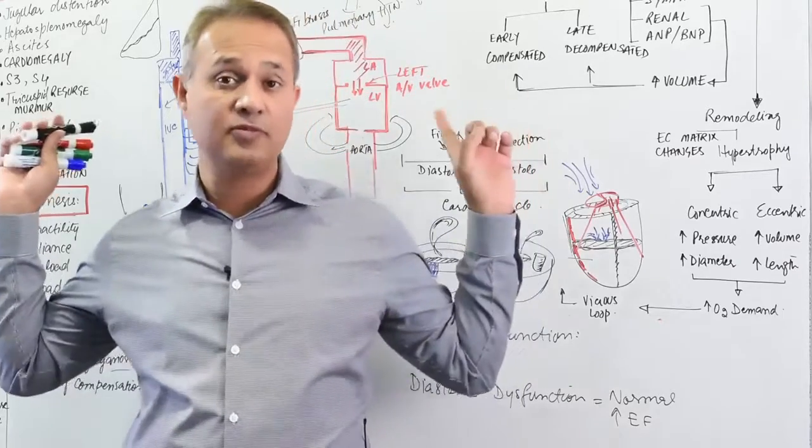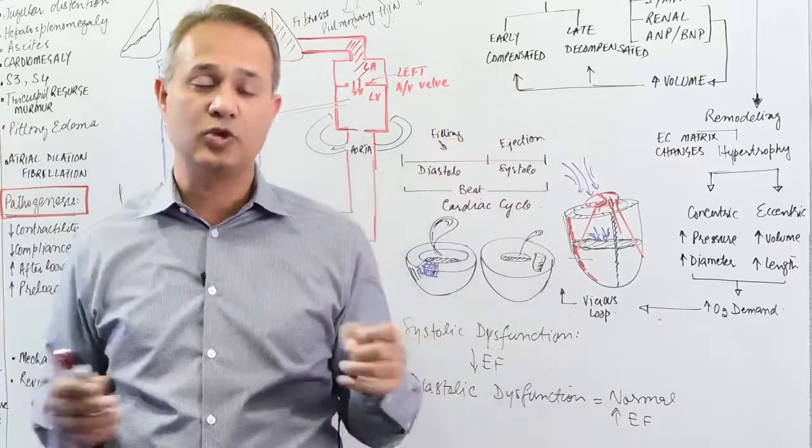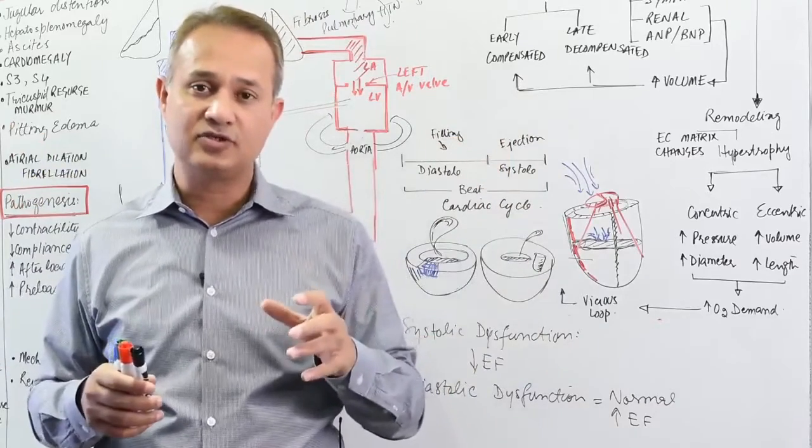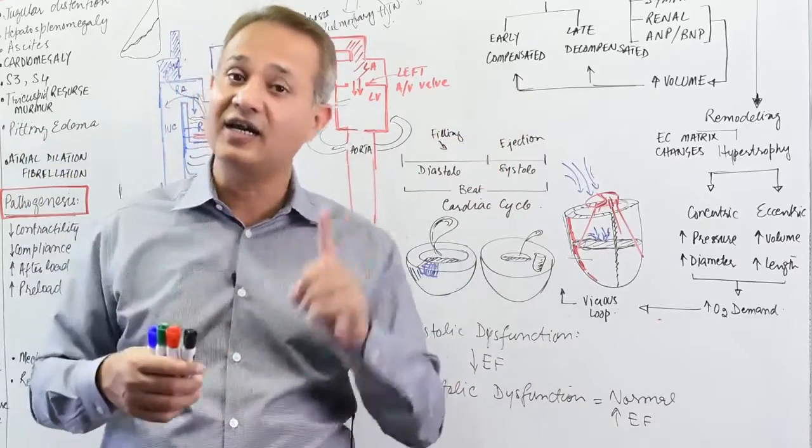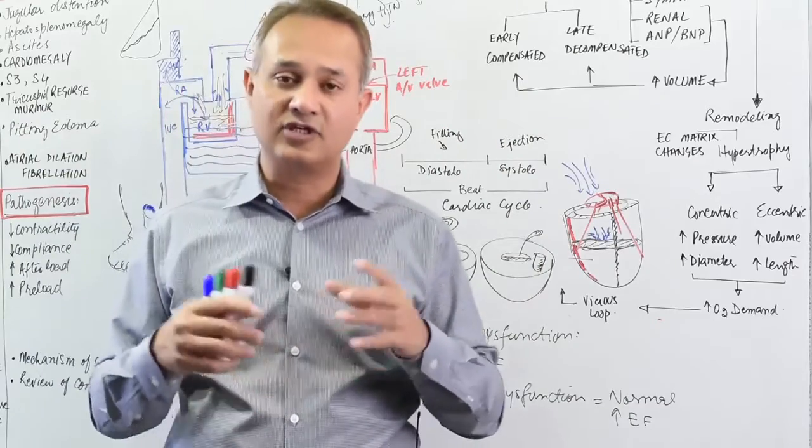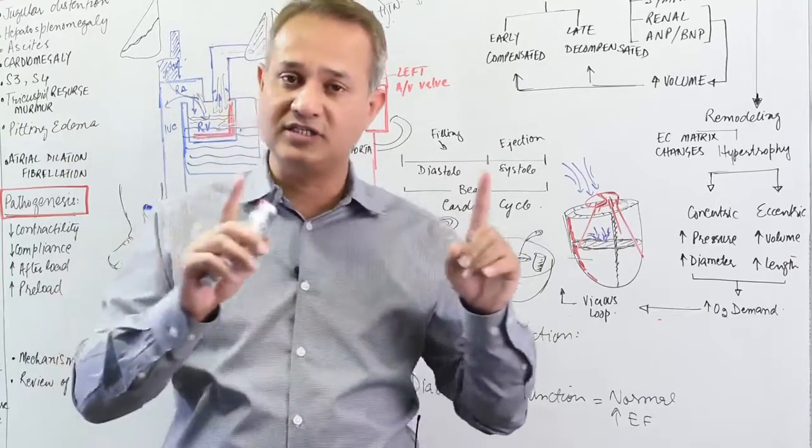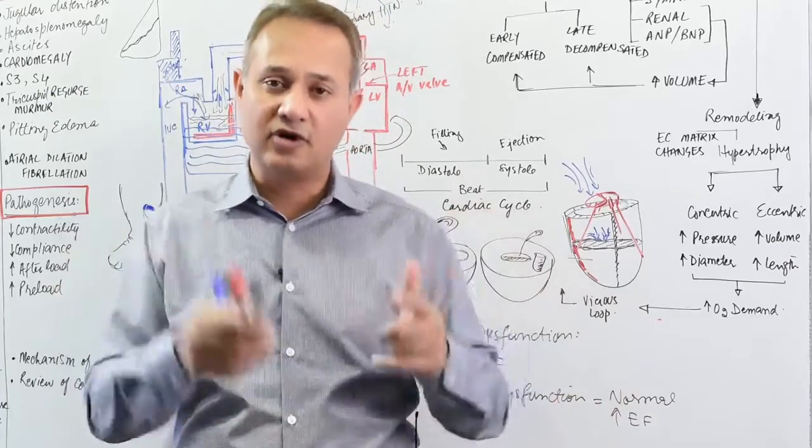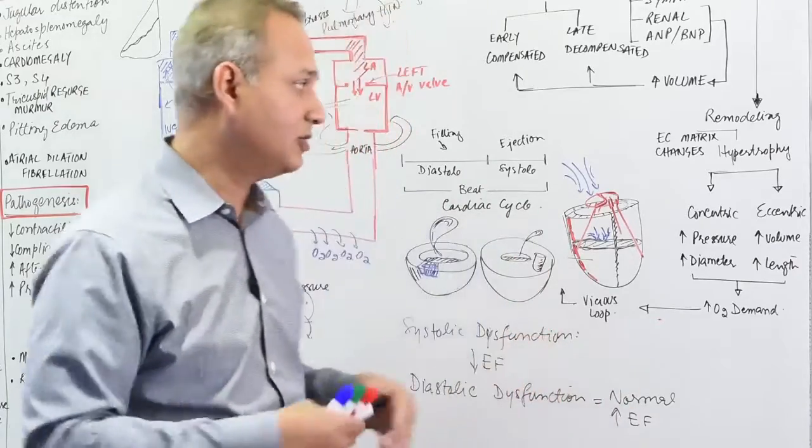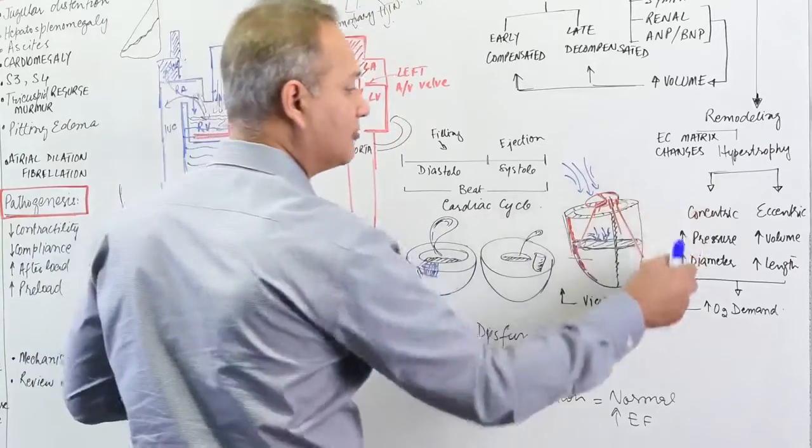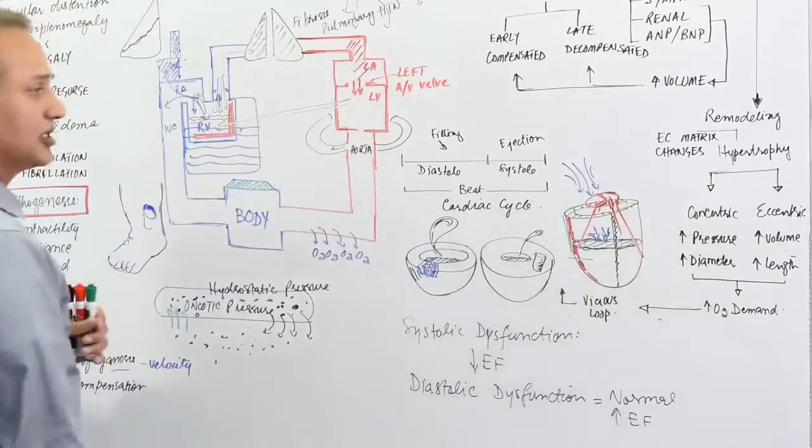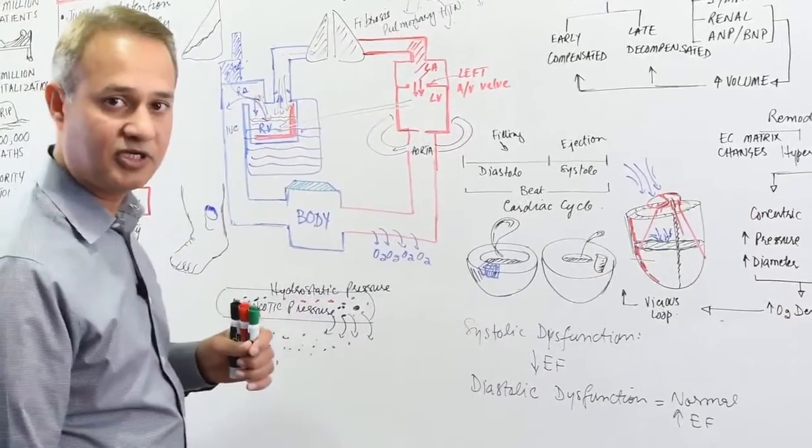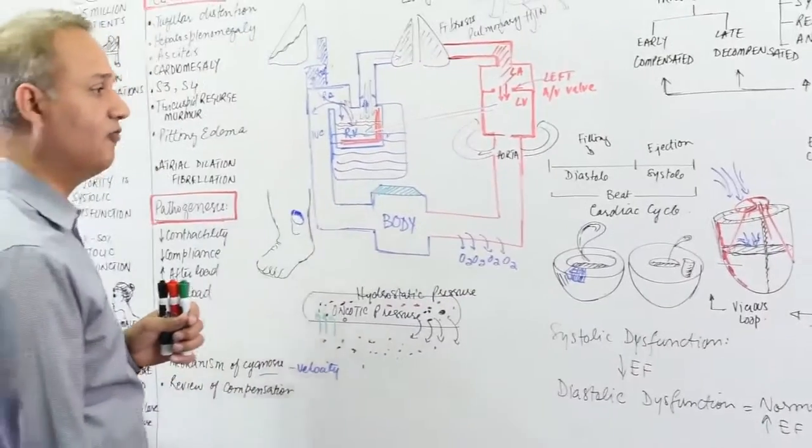Pathological remodeling happens in failure situations where the heart is damaged. As it keeps exerting itself, the heart becomes hypertrophied, increasing oxygen demand. Since the heart is already failing without enough output, this causes a vicious loop. The hypertrophy can be eccentric or concentric—concentric from high pressure, eccentric from high volume.